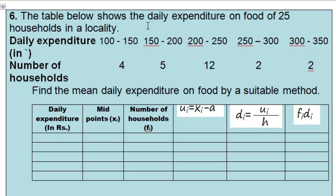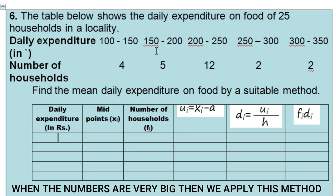This is the last question that we are going to solve. The question is like this: the table below shows the daily expenditure on food of 25 households in the locality. Daily expenditure in rupees and number of households are given in this table. Now we have to find the mean daily expenditure on food by a suitable method.